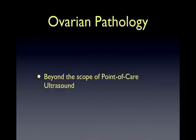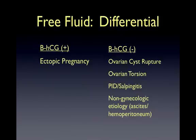The last segment of this lecture looks at ovarian pathology, which is beyond the scope of point-of-care ultrasound but should be recognized when encountered. Free fluid may be pathologic, and the table here lists a differential for free fluid in the pregnant patient and non-pregnant patient. Having already covered ultrasonographic findings for an ectopic pregnancy, we will focus on ovarian cysts, torsion, and salpingitis.